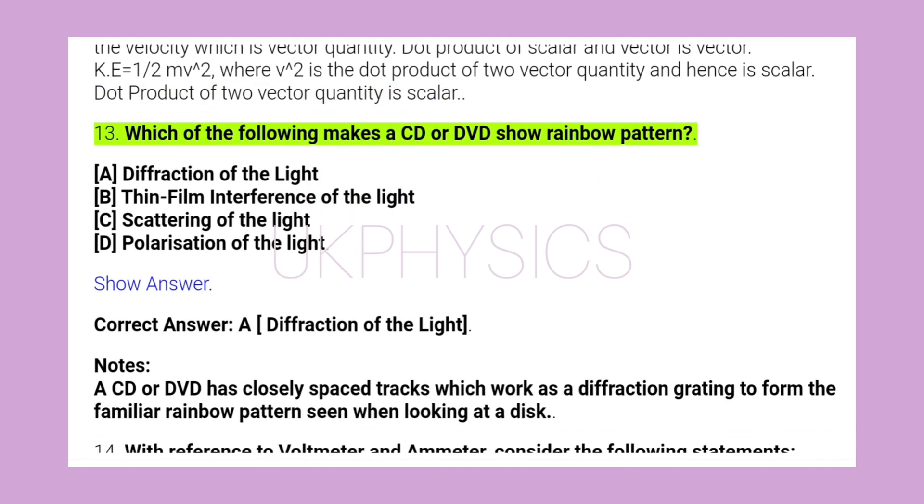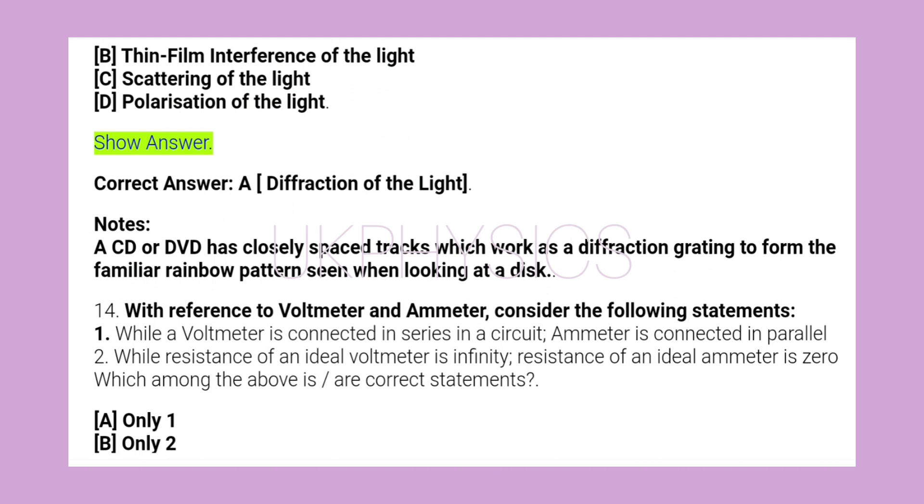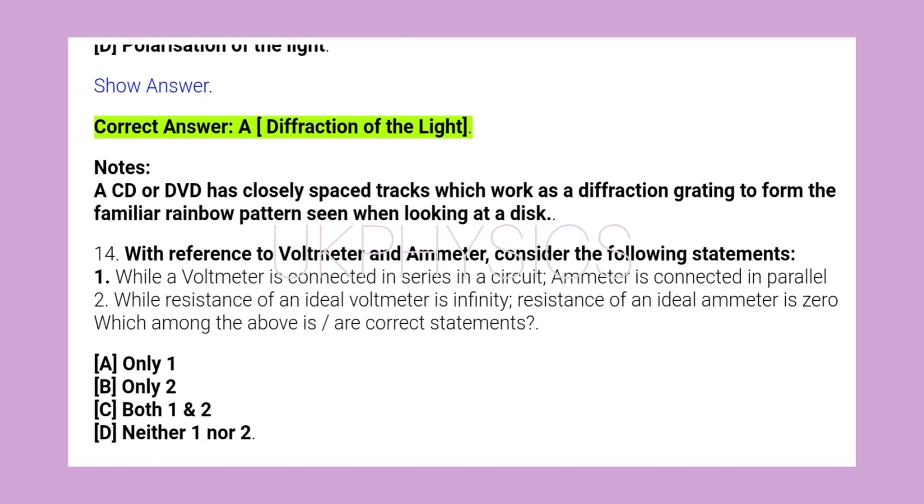13. Which of the following makes a CD or DVD show rainbow pattern? A. Diffraction of the light, B. Thin film interference of the light, C. Scattering of the light, D. Polarization of the light. Correct answer A. Diffraction of the light.